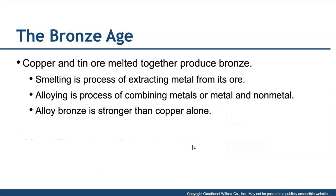The Bronze Age started. One thing to remember is that bronze is both copper and tin melted together. We began to smelt bronze — smelting is the process of extracting metal from its ore and breaking it down. Alloying is combining different metals, or metals and nonmetals together. When copper and tin were mixed, the resulting bronze was actually stronger than copper by itself. How that was actually discovered is a question for the historians to figure out.